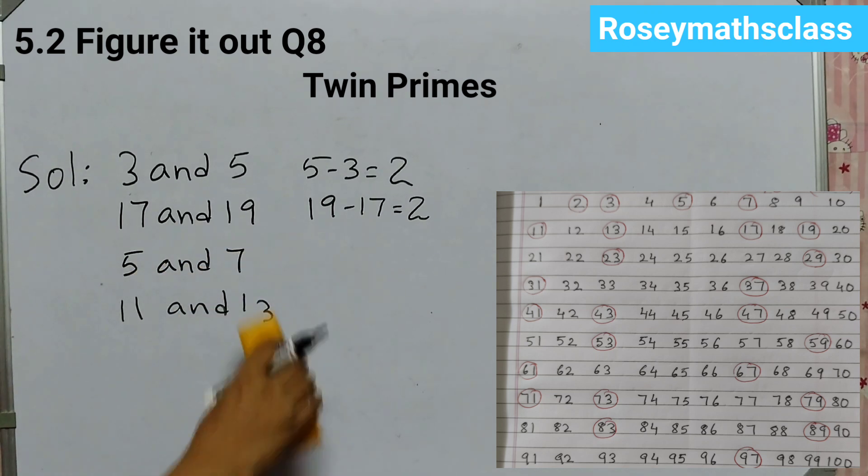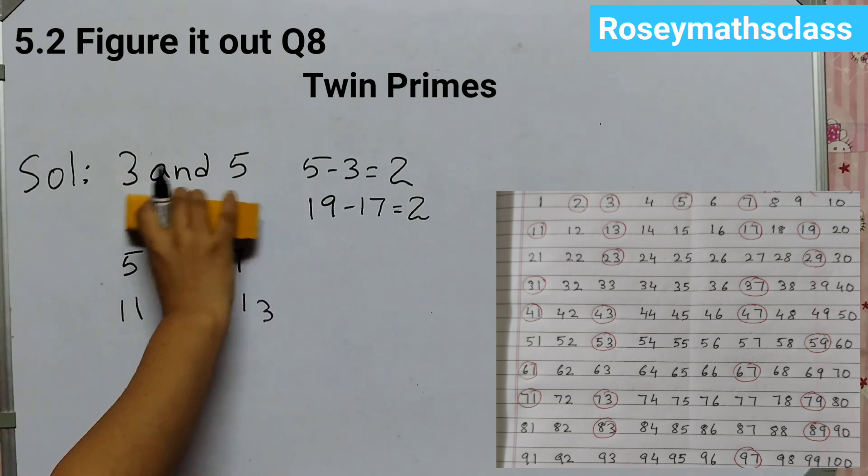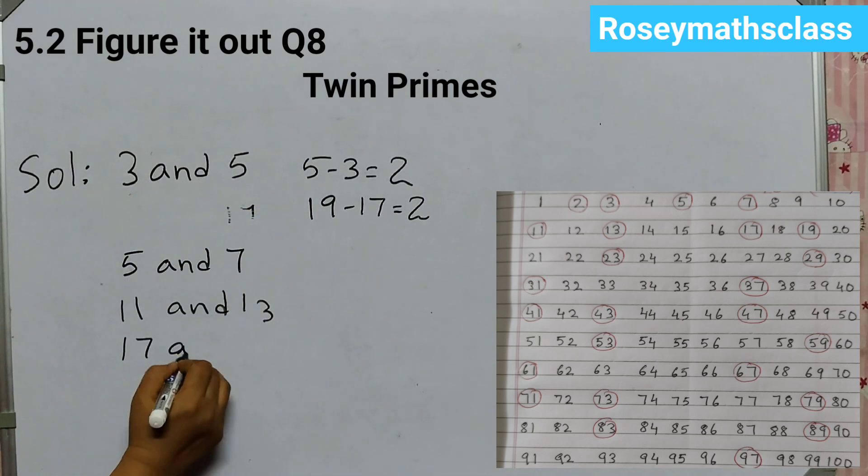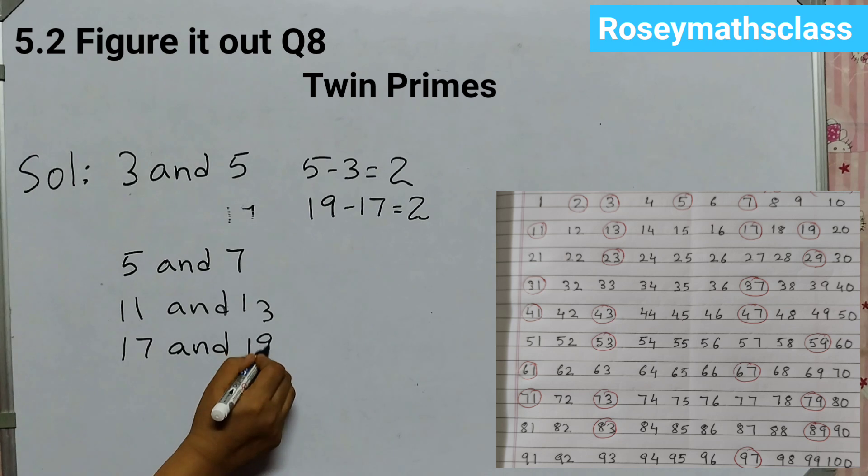Then you can write 17 and 19 here. Instead of this, you can write 17 and 19 here. That's in order. Then we have 29 and 31.